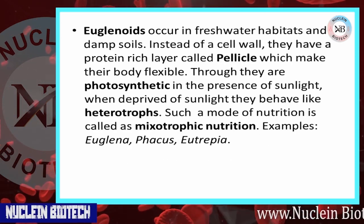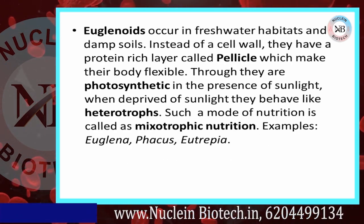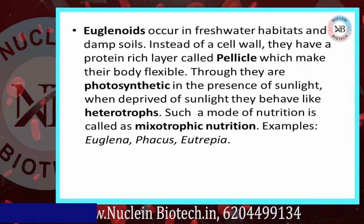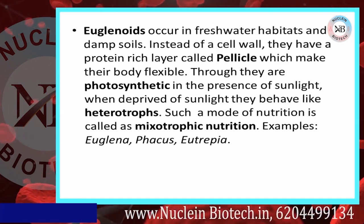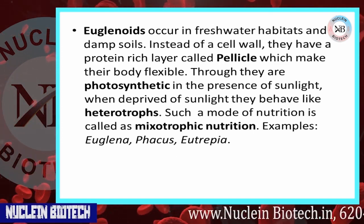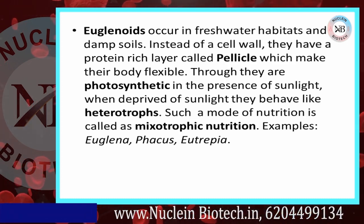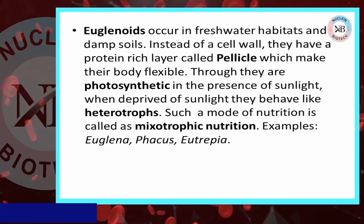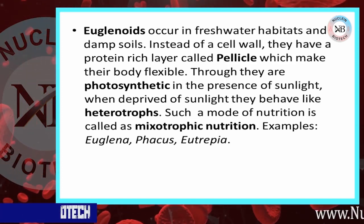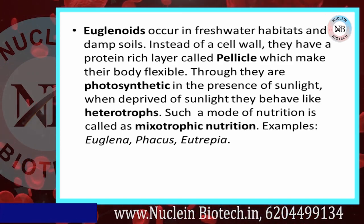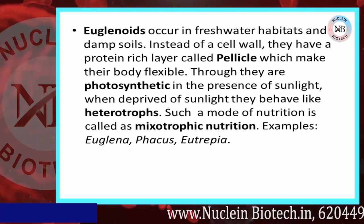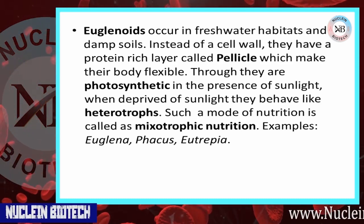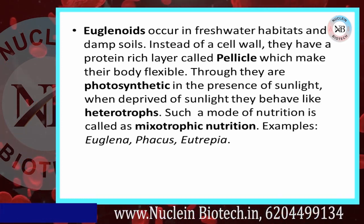Euglenoids are present in fresh water habitats and damp soils. Instead of a cell wall, they have a protein-rich layer called the pellicle, which makes their body flexible. They are photosynthetic in the presence of sunlight, but when deprived of sunlight they behave like heterotrophs. Such a mode of nutrition is called mixotrophic nutrition. Example: Euglena.